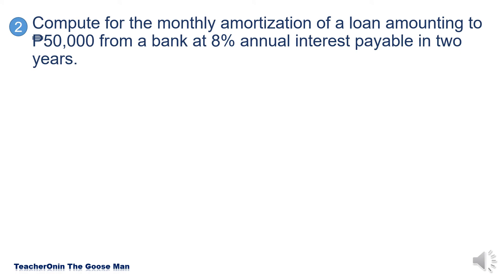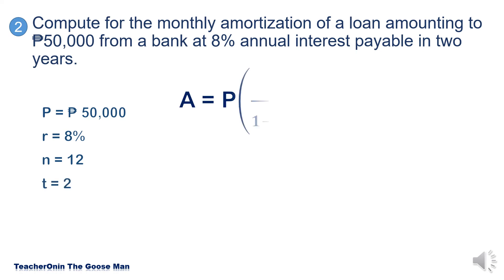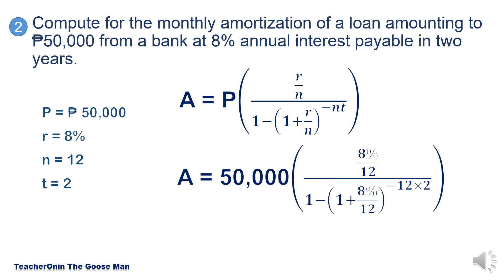Let us consider this example: compute for the monthly amortization of a loan amounting to P50,000 from a bank at 8% annual interest, payable in two years. The given values are: present value is P50,000, rate is 8%, frequency in a year is 12, and time is 2 years. Note that 12 times 2 equals 24, meaning you have 24 payments in all.